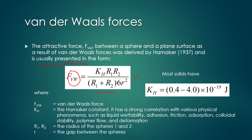The Hamaker constant K_h has strong correlation with physical phenomena such as liquid wettability, adhesion, friction, adsorption, colloidal stability, polymer flow and particle deformation. Its value ranges from 0.4 to 4.0 × 10⁻¹⁹ joule. R1 and R2 are the radii of the particles or spheres in the powder, and r² is the gap between two particles or spheres. Using this equation, van der Waals force in agglomerates or granules can be calculated.